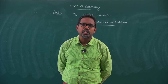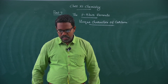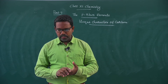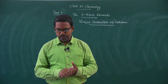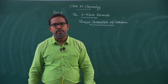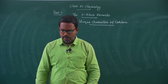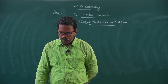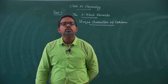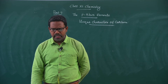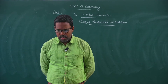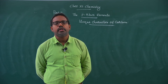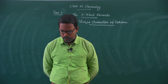Diamond and graphite are industrially important allotropic forms of carbon. Both diamond and graphite are crystalline in nature. Diamond is denser than graphite — the density of diamond is 3.514 g/cm³ while graphite is 2.226 g/cm³. Diamond is the hardest substance known, while graphite is a soft material with lubricating properties.